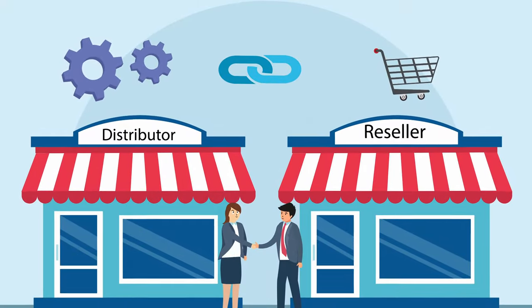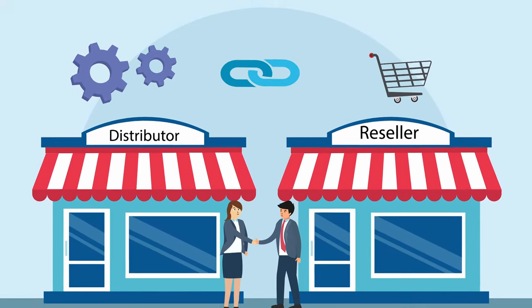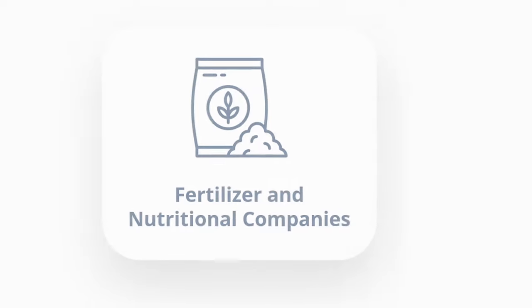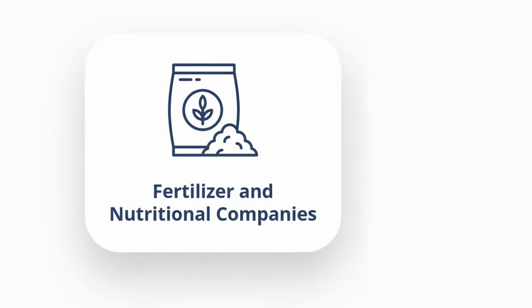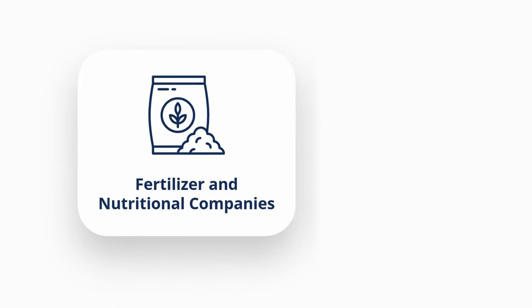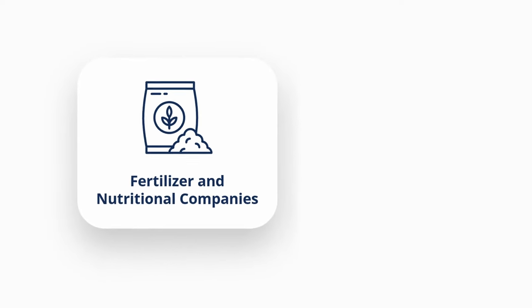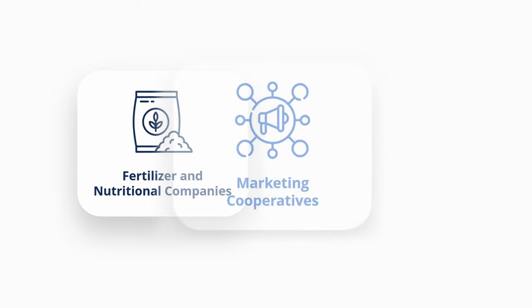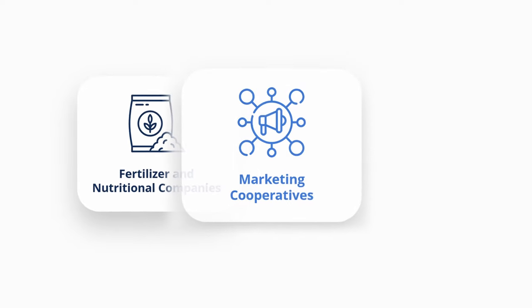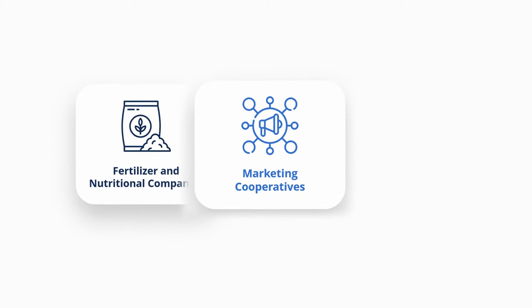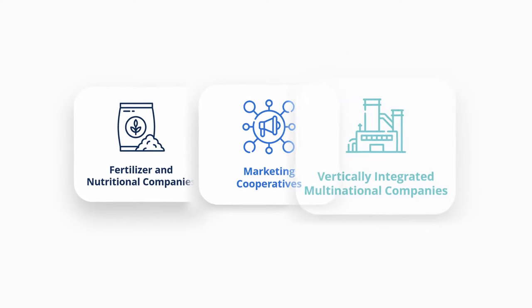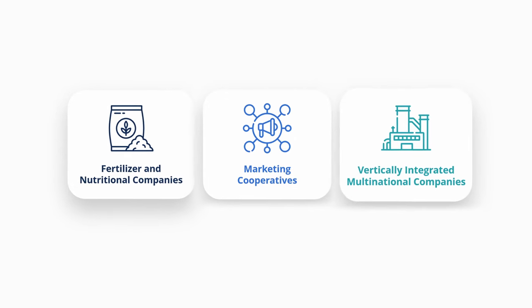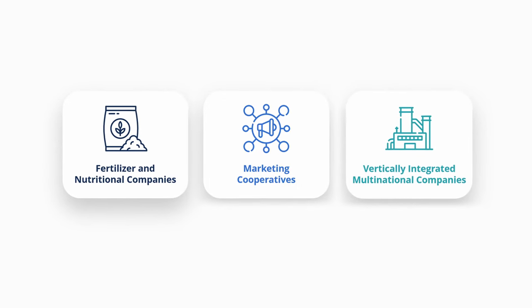Examples of agribusiness include fertilizer and nutritional companies such as Nutrient and Fortify AgriScience, marketing cooperatives such as the Dairy Farmers of America, or even vertically integrated multinationals such as Nestle and ADM.